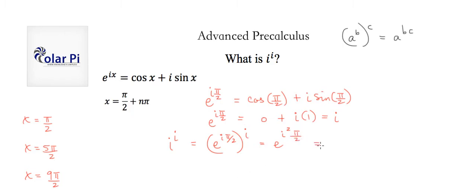And i squared, we all know, is negative 1. So this is going to turn into e to the negative π over 2. And therefore, 1 divided by e to the π over 2.